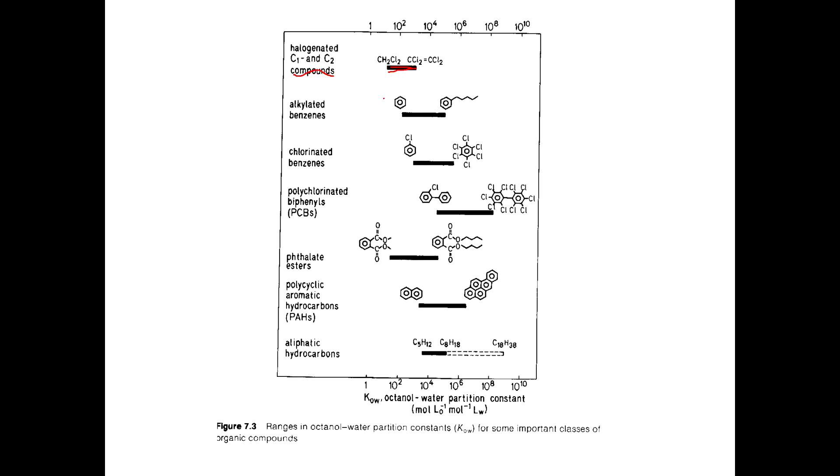The longer the alkyl chain gets, the bigger KOW gets over here. Same thing, chlorinated benzenes. If you only have 1 Chlorine, you're over here. We add 6 Chlorines, you get up to a KOW value, maybe around 10 to the 6th.